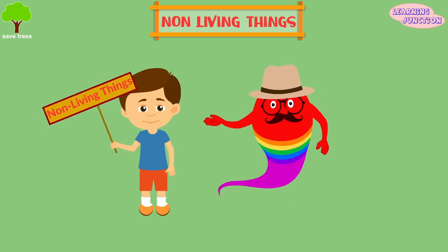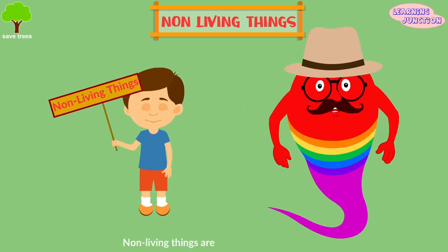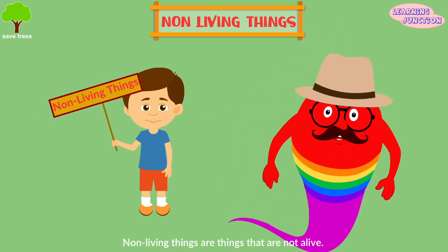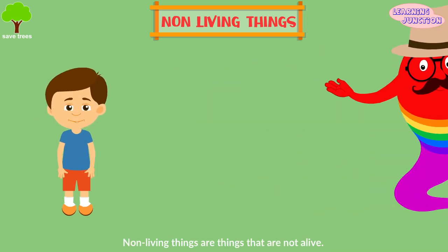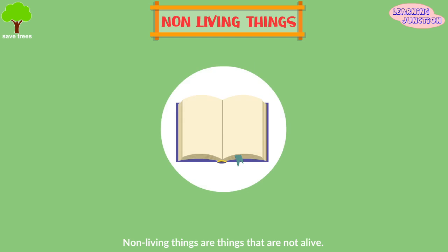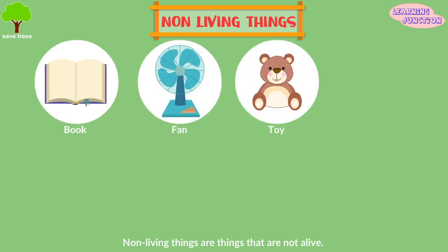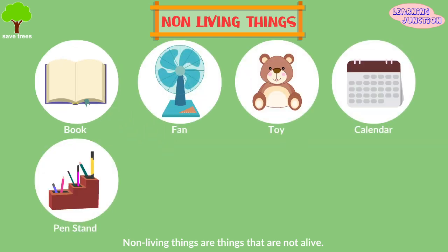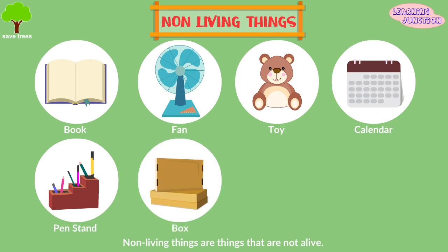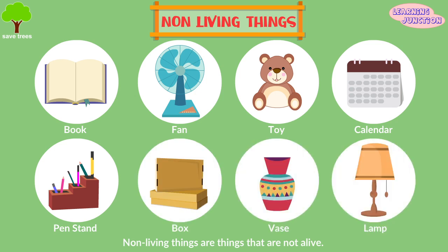Now, the non-living things. Non-living things are things that are not alive. Some examples of them are book, fan, toy, calendar, pen stand, wooden box, vase, and table lamp.